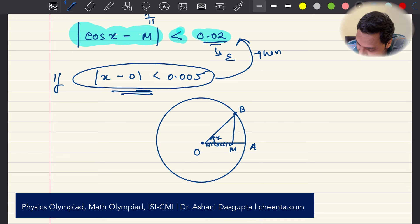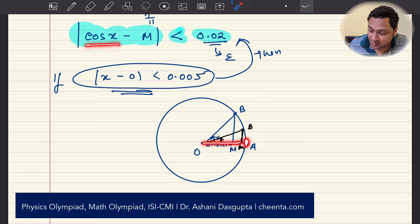So as you reduce X, that is as you reduce X means as you make the difference between X and 0 smaller, as you reduce X what's happening is this OM, this OM this distance gets closer to the length of the radius which is 1. So cosine of X which is this much, it's getting closer to the length of the radius which is 1. So you can make this cosine of X as close to 1 as you want by making X the angle sufficiently small.